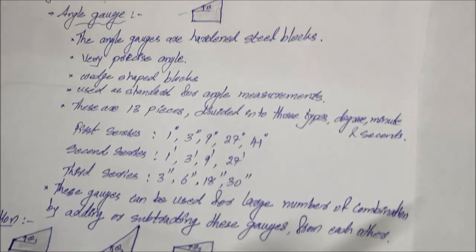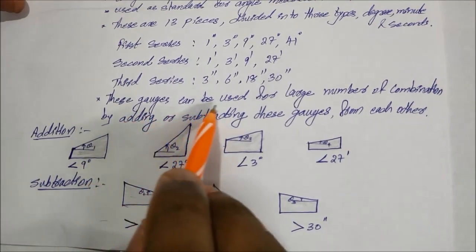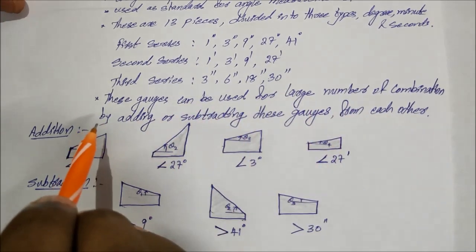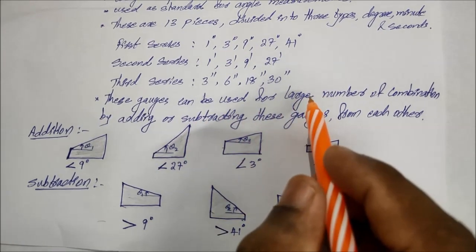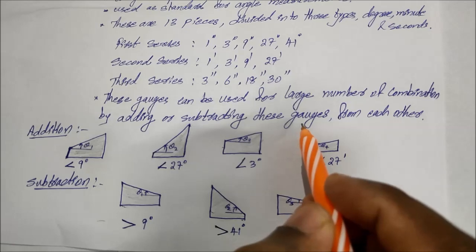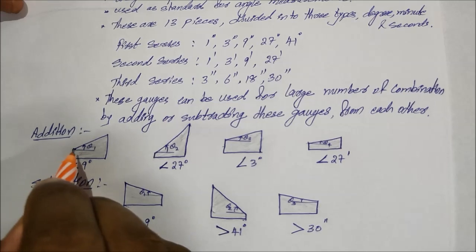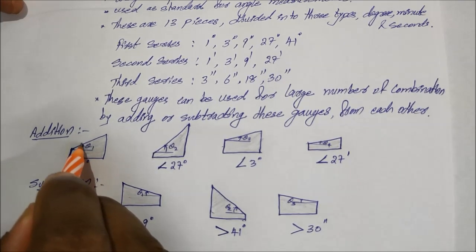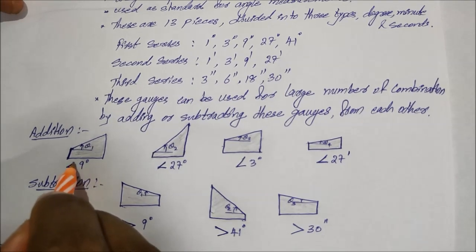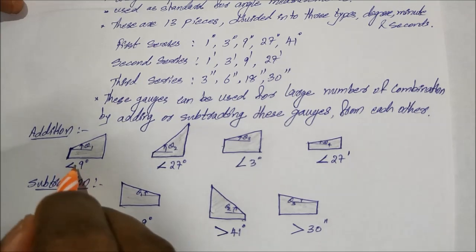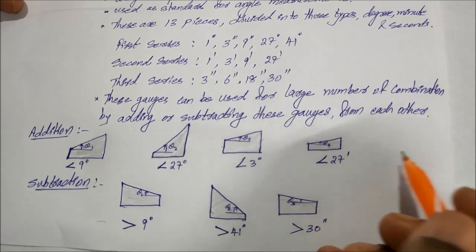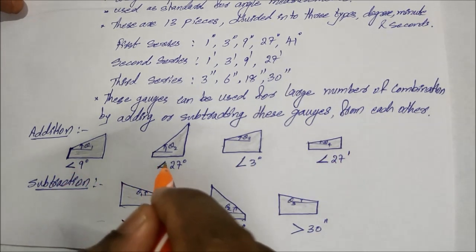These gauges are used for a large number of combinations by adding and or subtracting these gauges from each other. Just like slip gauges, we use adding and subtraction. The angle theta is represented — for example, 9 degrees, 27 degrees, 3 degrees, 27 minutes, or seconds — using addition or subtraction methods.